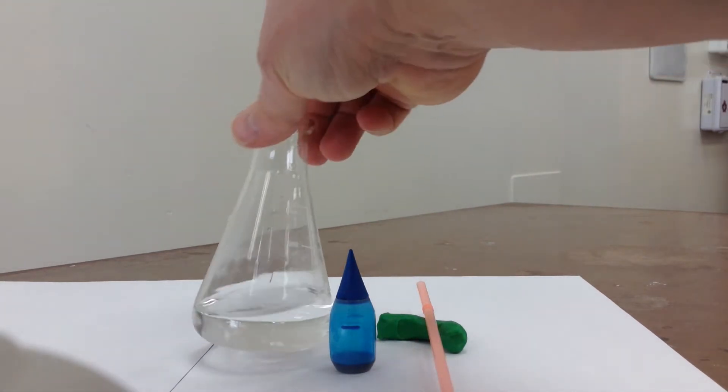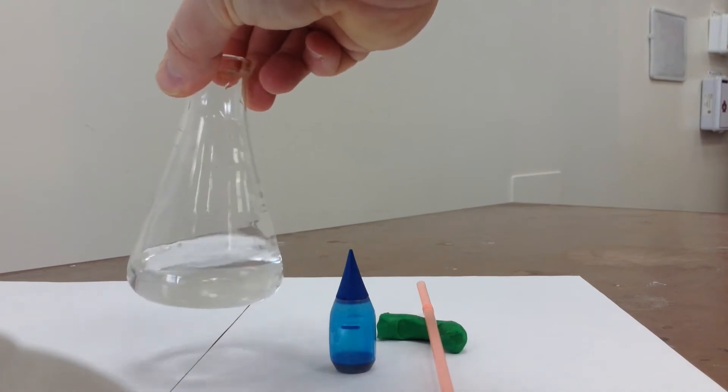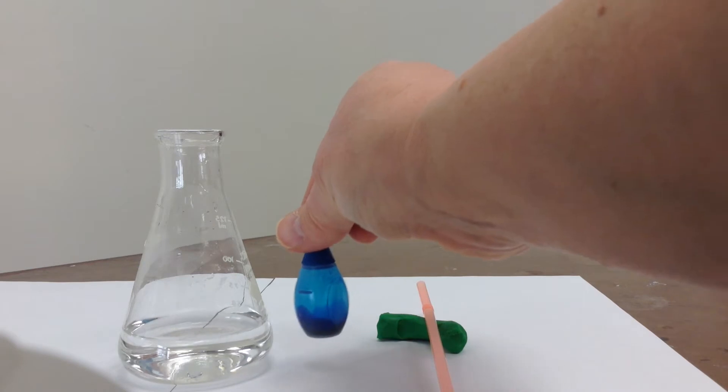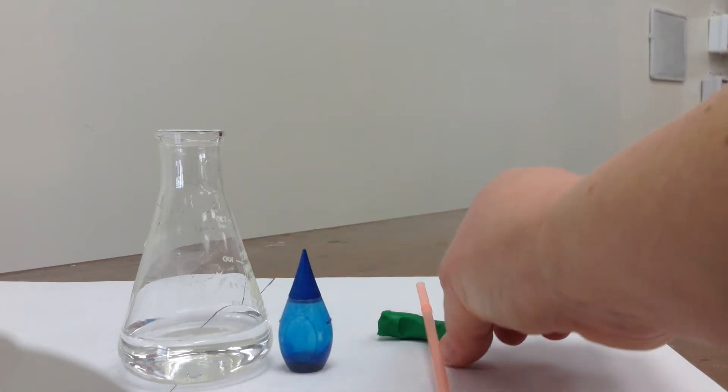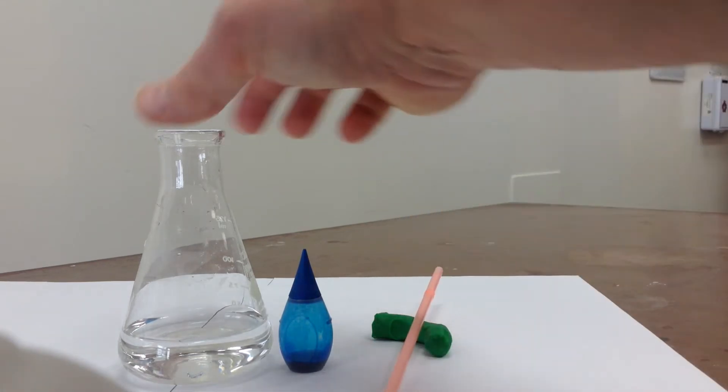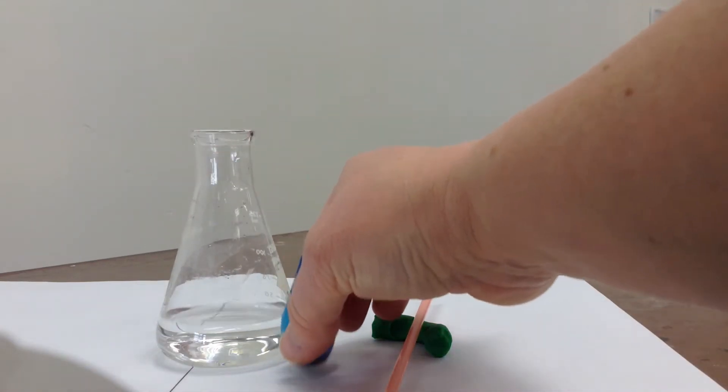So what we have is a flask with some diluted rubbing alcohol, we have some food coloring so we can see what's going on, we have some modeling clay, and we have a straw, and that's all you need for it.